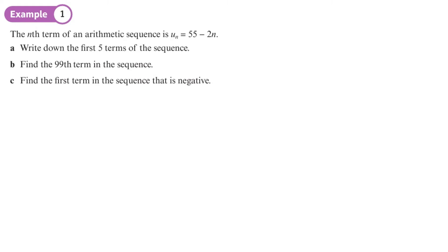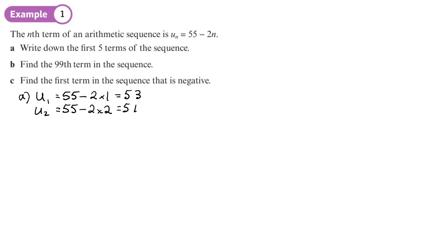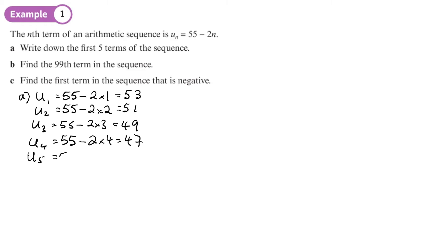Using this new notation, let's find the first five terms given the nth term rule. u1 = 55 − 2(1) = 53. u2 = 55 − 2(2) = 51. u3 = 55 − 2(3) = 49. You can see each term is going down by 2, which is what we'd expect with a common difference of negative 2.